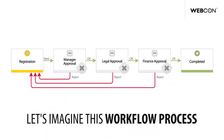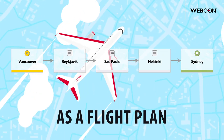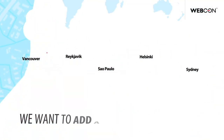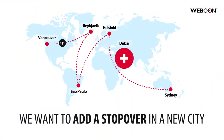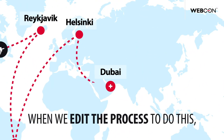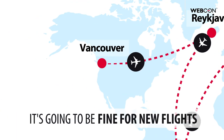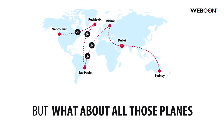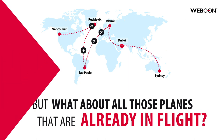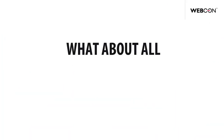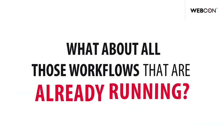Let's imagine this workflow process as a flight plan. We want to add a stopover in a new city. When we edit the process to do this, it's going to be fine for new flights. But what about all those planes that are already in flight? What about all those workflows that are already running?